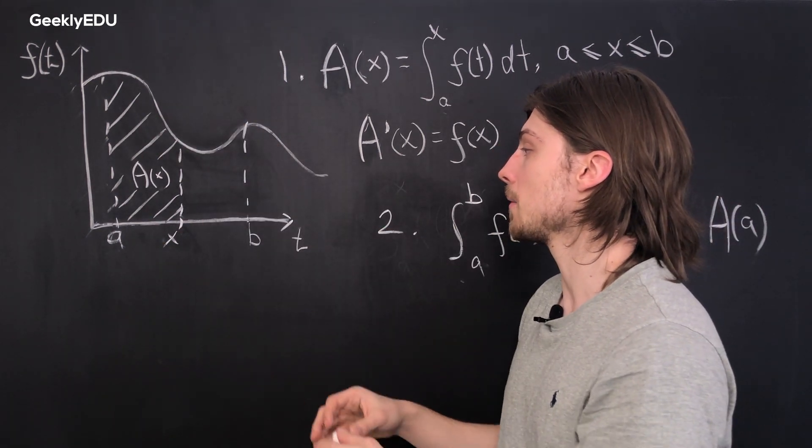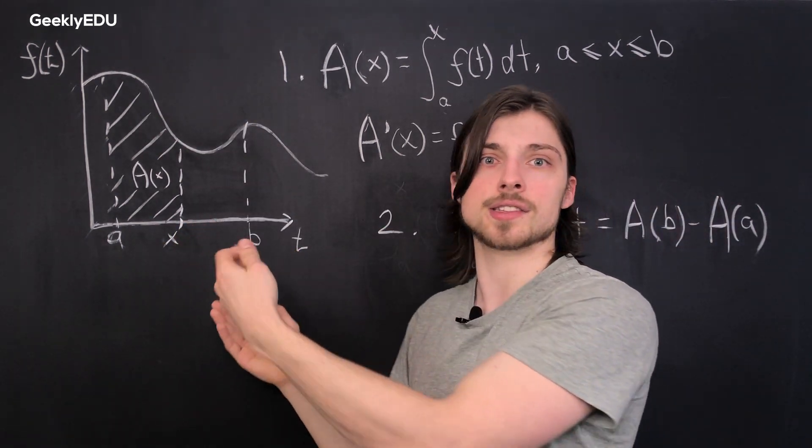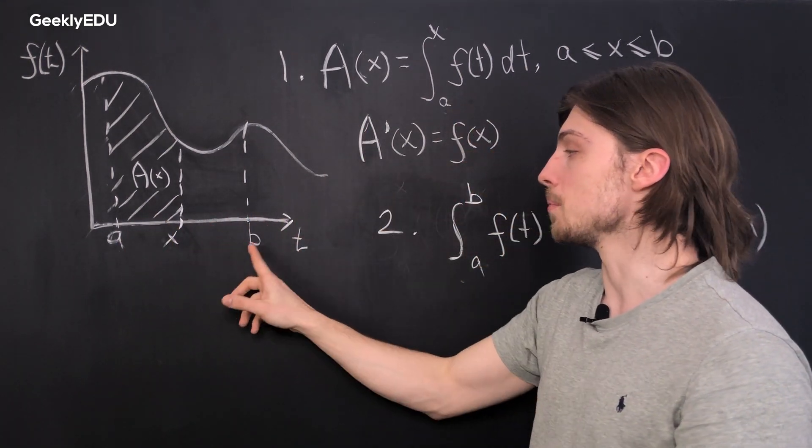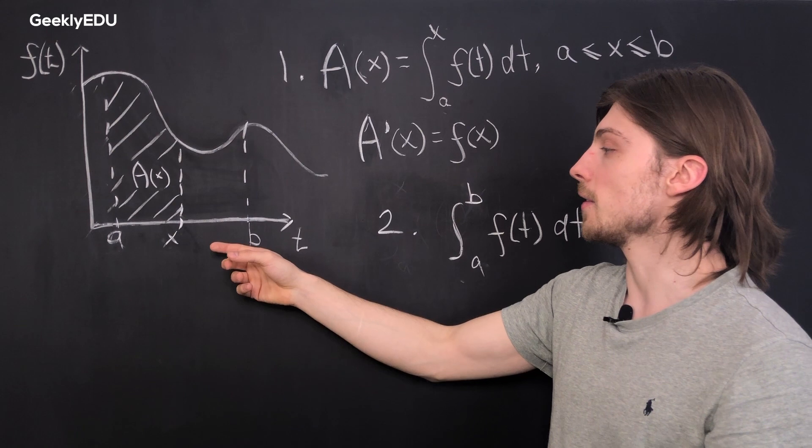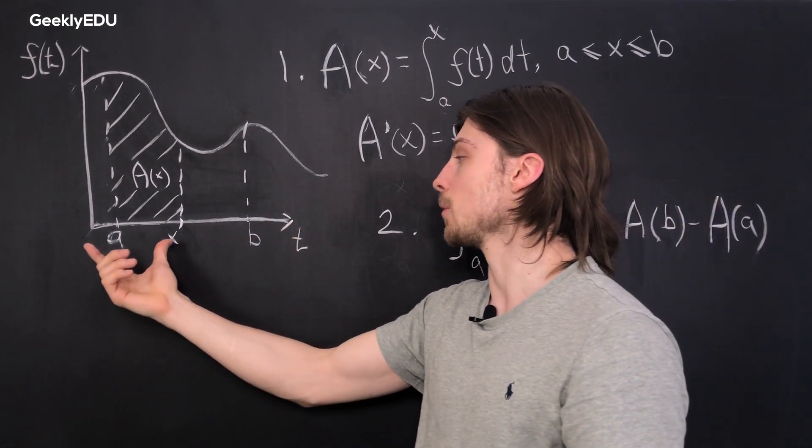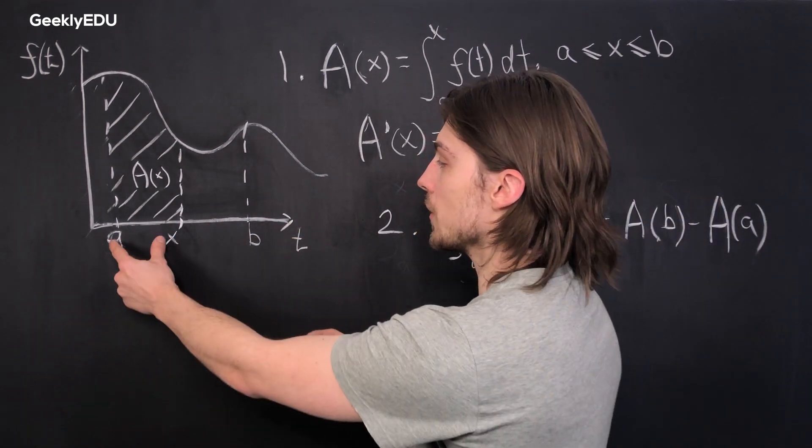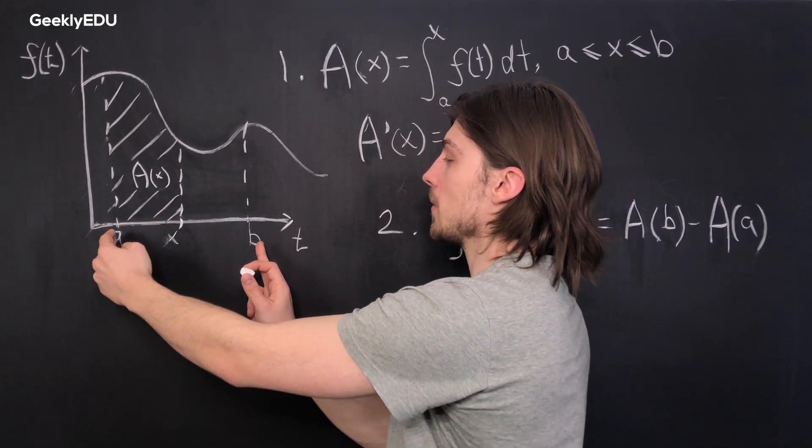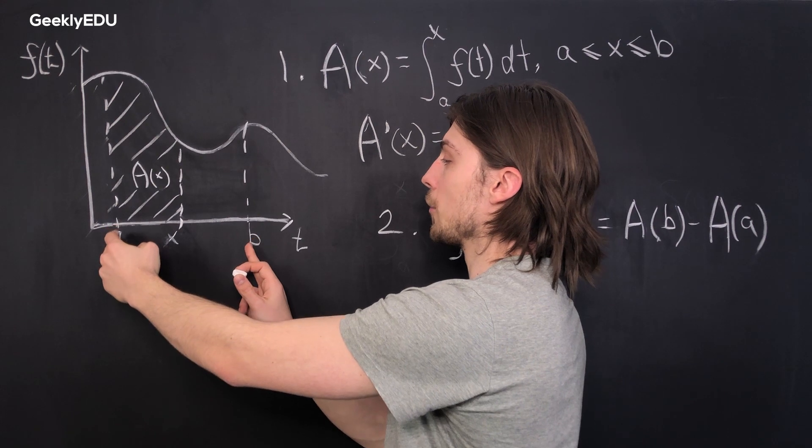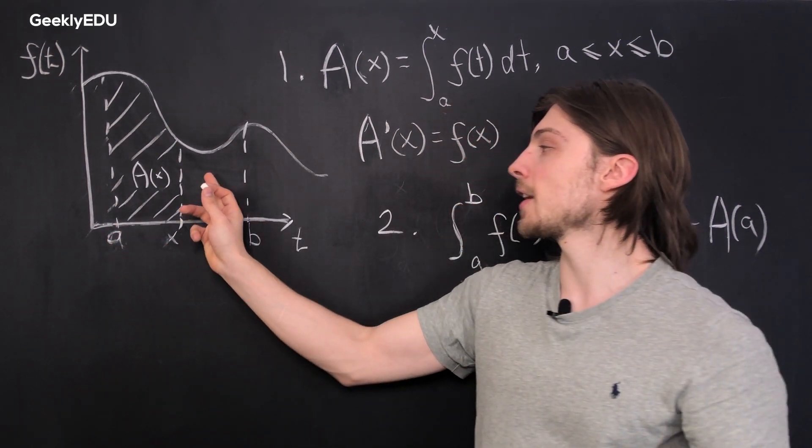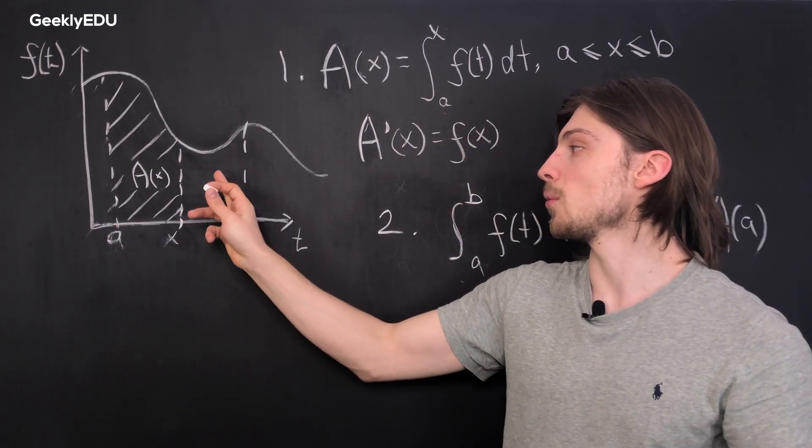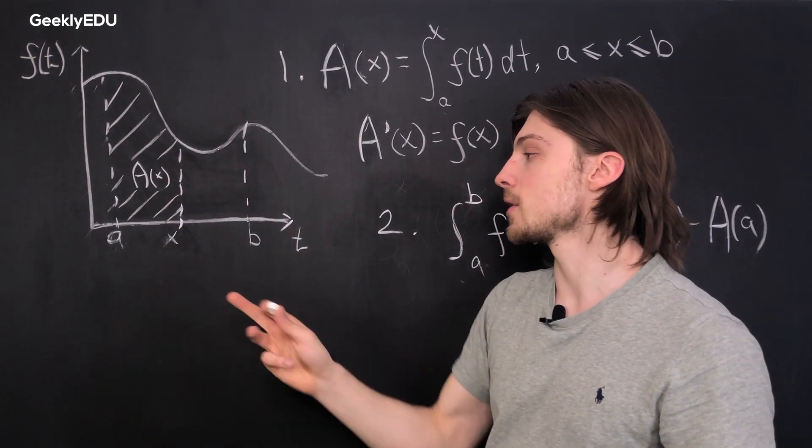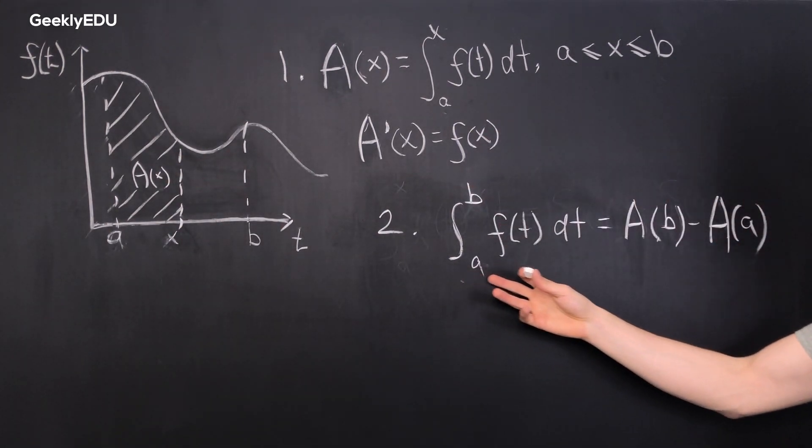And if we wanted to find the area, let's say between x and b, we would find A with respect to b and we would then subtract from that A with respect to x. So this section here would be subtracted from this entire interval from a to b, giving us what would remain, which would be the area under the curve from x to b, and that's what we represent.